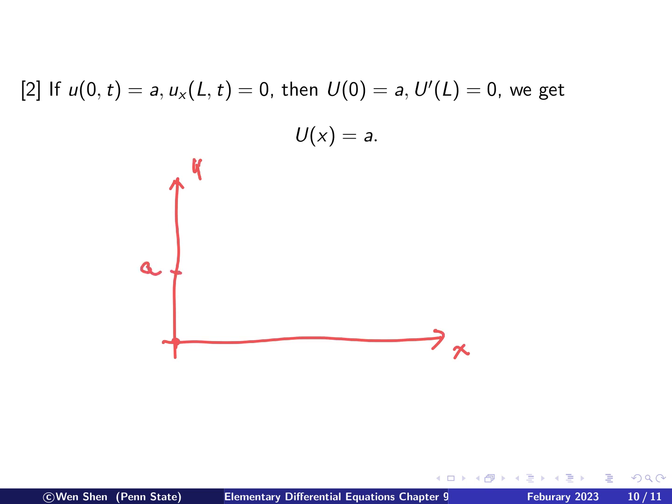So at zero is A. Let's say A is here. And then at L, what it says is that the derivative is zero. So that derivative will give you the slope of that line. So it's zero. Therefore, you will just have a constant function equals A all the way to L.